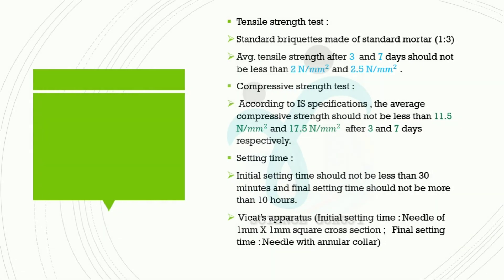Next is tensile strength. Standard mortar 1:3 ratio is used. The important result: average tensile strength after 3 and 7 days should not be less than 2 N/mm² and 2.5 N/mm² respectively. Next, compressive strength test: according to IS specifications, the average compressive strength should not be less than 11.5 N/mm² and 17.5 N/mm² after 3 and 7 days respectively.